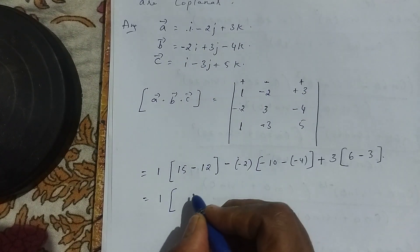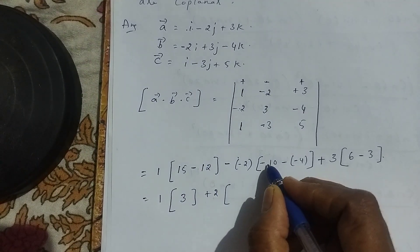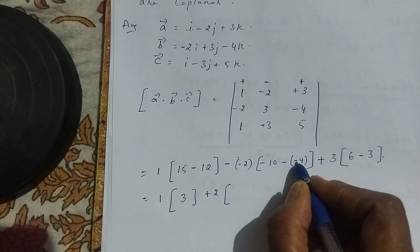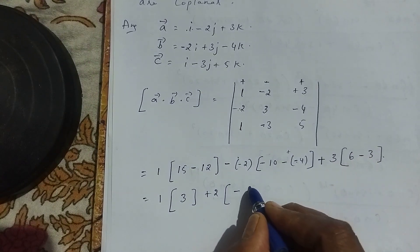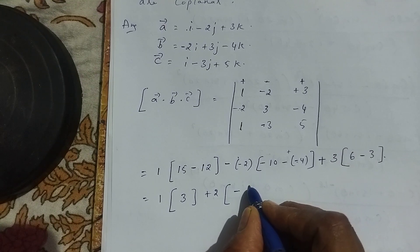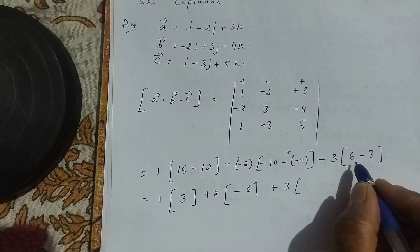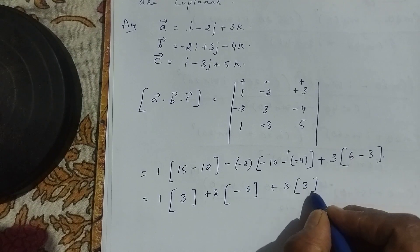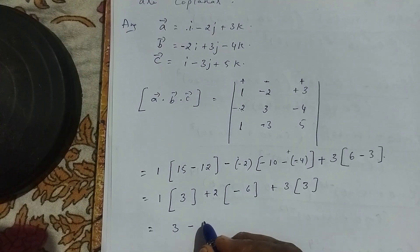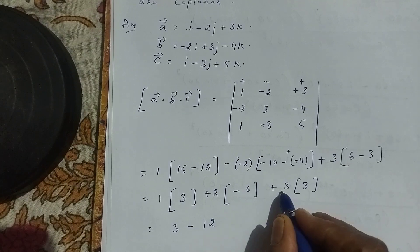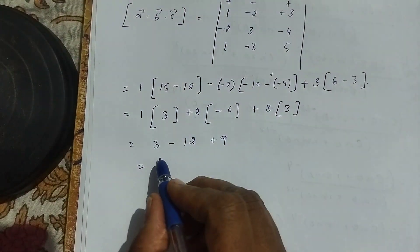Now we compute: the first term is 15 minus 12 equals 3, so 1 times 3 is 3. The second term: minus 10 plus 4 is minus 6, and with the minus sign applied it becomes plus 6, giving minus 2 times minus 6... wait — combining: we get 3 from the first term, then minus 6 from the second, and 3 times 3 is 9 from the third.